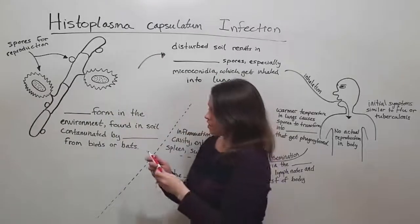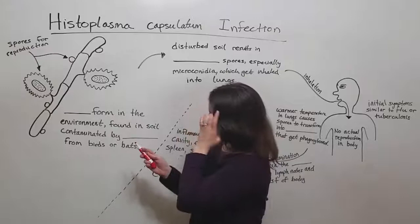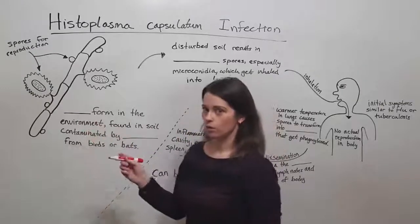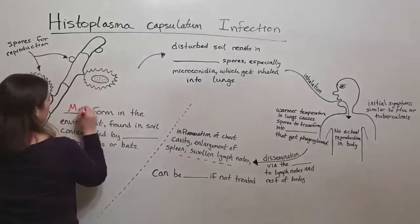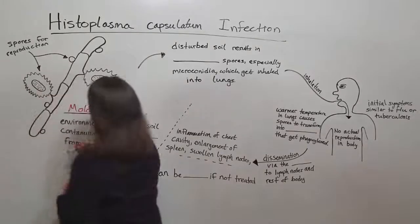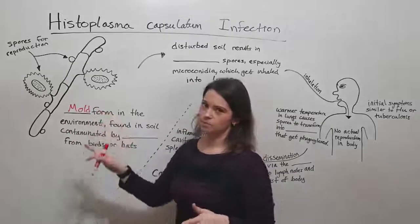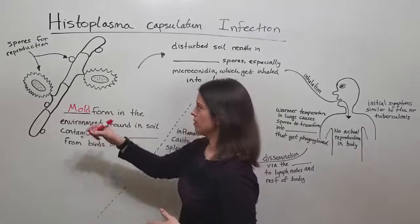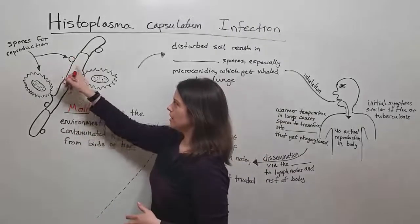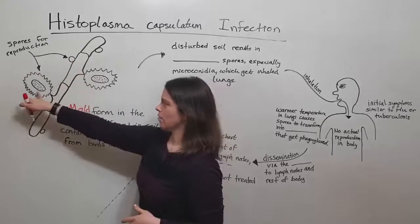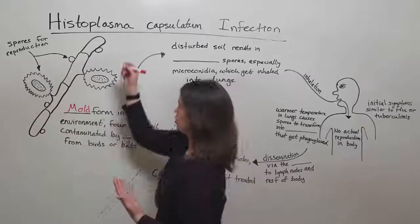So first let's talk about where it comes from. It is in a mold form when it's found in the environment. And so this is what the mold form looks like. It produces a few different kinds of spores for reproduction in the environment. So there are microconidia, which would be small ones, and macroconidia, which are the larger ones.